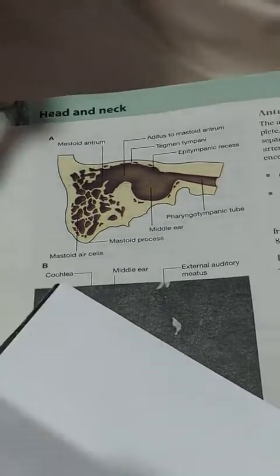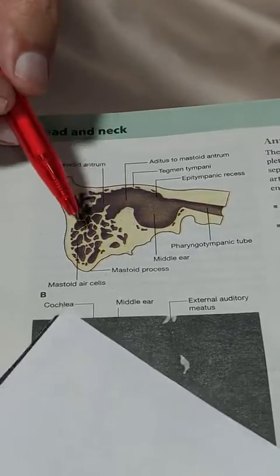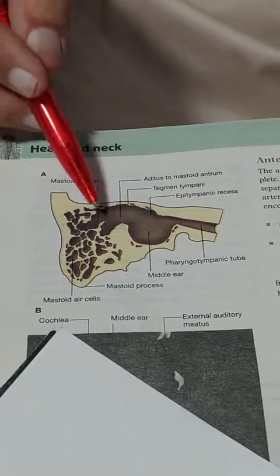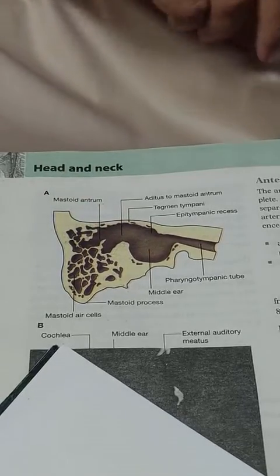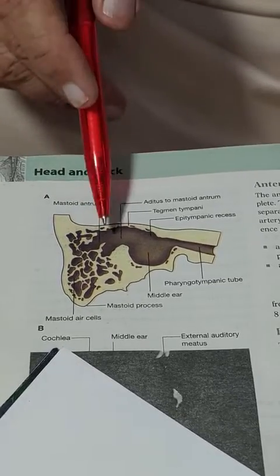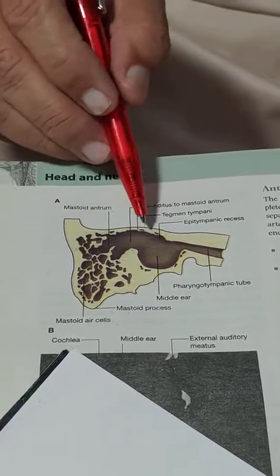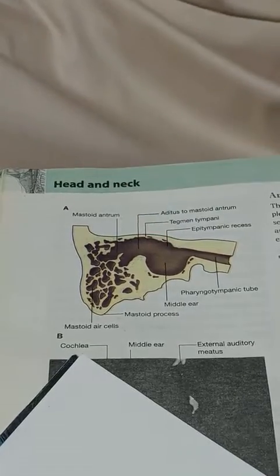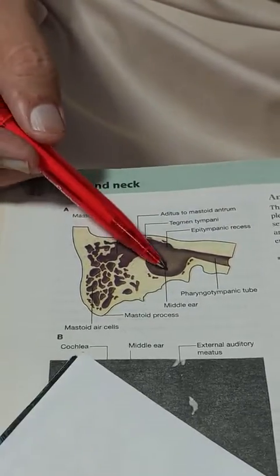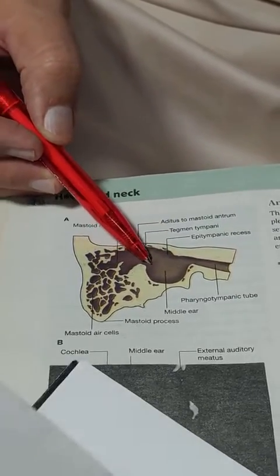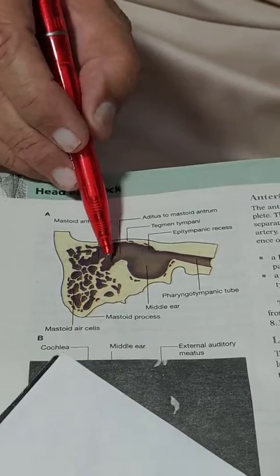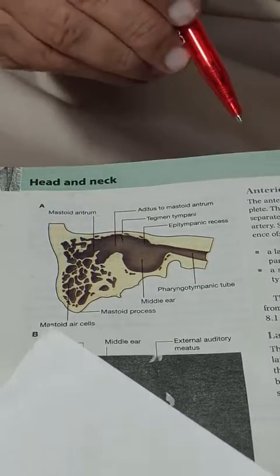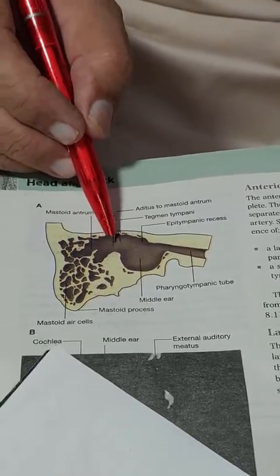This is the middle ear cavity. You can see the mastoid process containing the mastoid air cells. Above that, in the petrous part of the temporal bone, this space is the mastoid antrum. The mastoid antrum is connected to the epitympanic recess part of the middle ear by a canal called the aditus to the mastoid antrum.